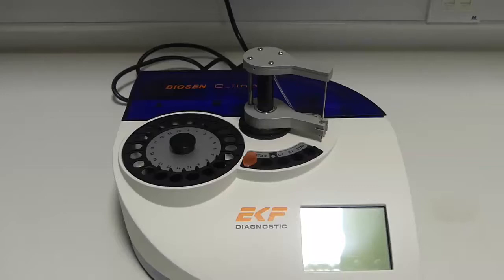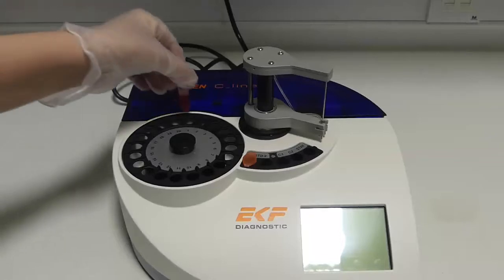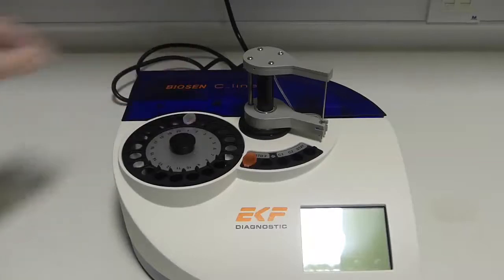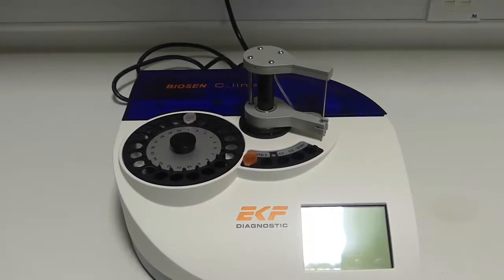For example during a lactate threshold test we would finish the test, the samples would have been organized or labeled to identify each stage, and then we would place the samples in order into the numbered tray on the biocene. Here you can see that we place one microtest tube into the tray at the number one position. You can also see that there is a standard sample in which the machine calibrates itself with the use of the standard solution with a known concentration.